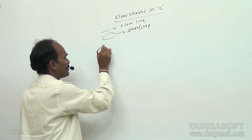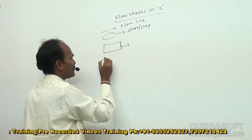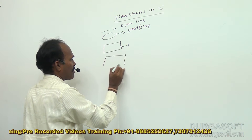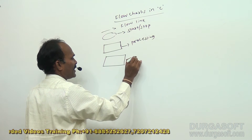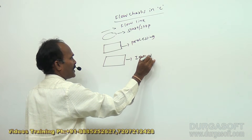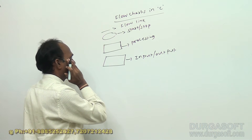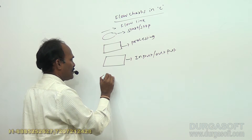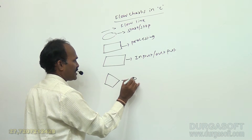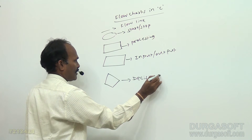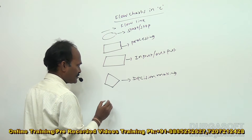The next symbol is for processing. This symbol is for processing. Now, this symbol is for input-output operations. And for decision-making, we use this symbol — the rhombus shape. This is called decision-making.